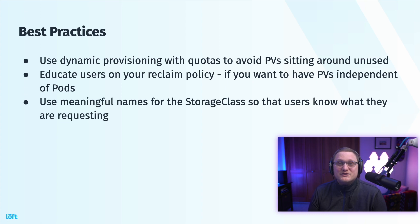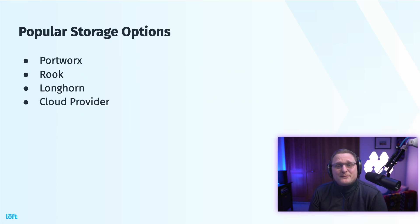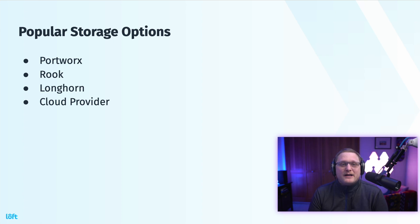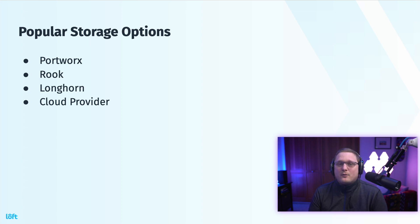Some popular storage options are Portworx, Rook, Longhorn, and your cloud provider. You're probably going to see a CSI from your cloud provider, such as EKS. Portworx is a great storage provider option. Rook will deploy Ceph for you and other things. Longhorn is another option. There are a bunch of options out there — these are just some of the popular ones.